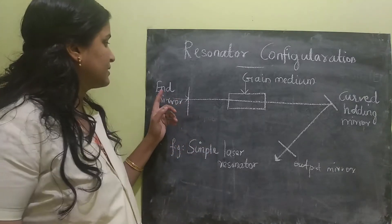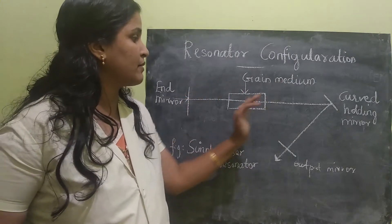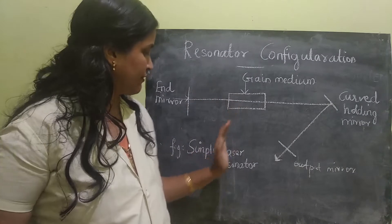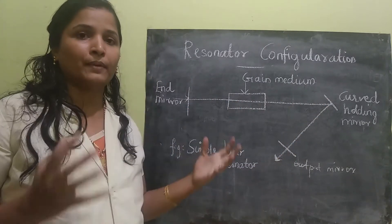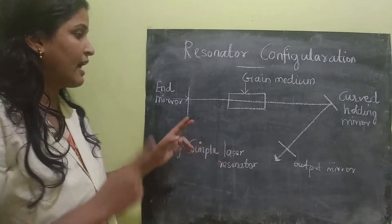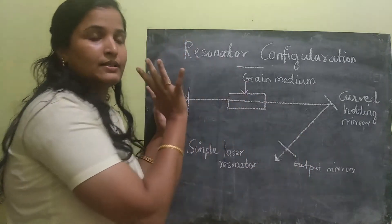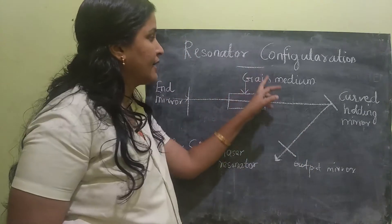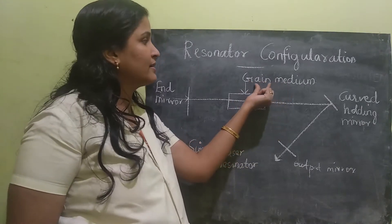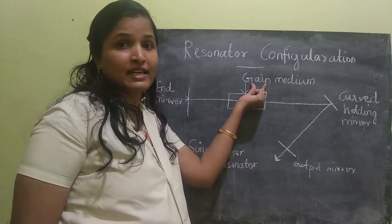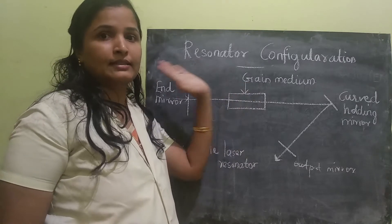First, there is the end mirror. For a simple laser resonator we have mirrors 1, 2, and 3. For a complex one we will have n number of mirrors — from the starting end mirror to the other end mirror (2n mirrors total). In between, we will have an active medium, also called the gain medium.